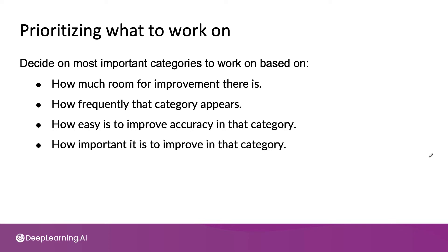And finally, how important it is to improve performance on that category. For example, you may decide that improving performance with car noise is especially important because when you're driving, you have a stronger desire to do search — especially search on maps and find addresses without needing to use your hands, if your hands are supposed to be holding the steering wheel. There is no mathematical formula that will tell you what to work on, but by looking at these factors, I hope you'll be able to make more fruitful decisions.